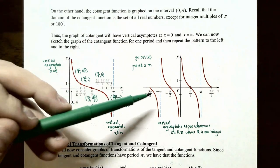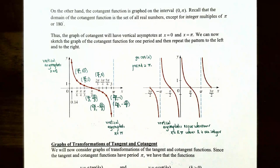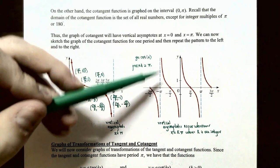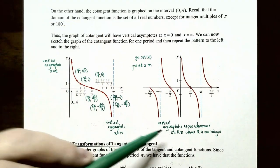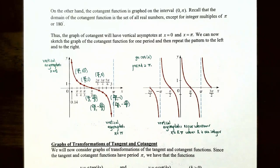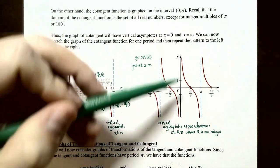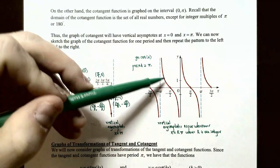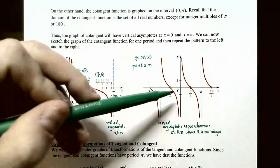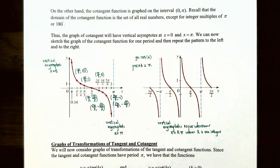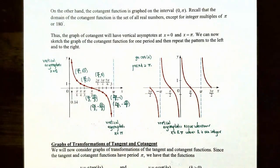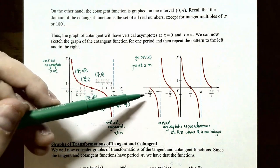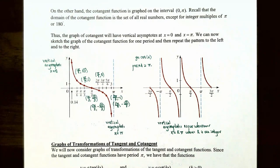The cotangent function is undefined for integer values of π, so there are vertical asymptotes at x = −π, x = 0, x = π, and so on — at x = kπ where k is an integer. The graph increases without bound on the right side of each vertical asymptote and decreases without bound on the left side. There are x-intercepts at x = π/2, 3π/2, 5π/2, −π/2, −3π/2, and so on — at every odd multiple of π/2 radians.